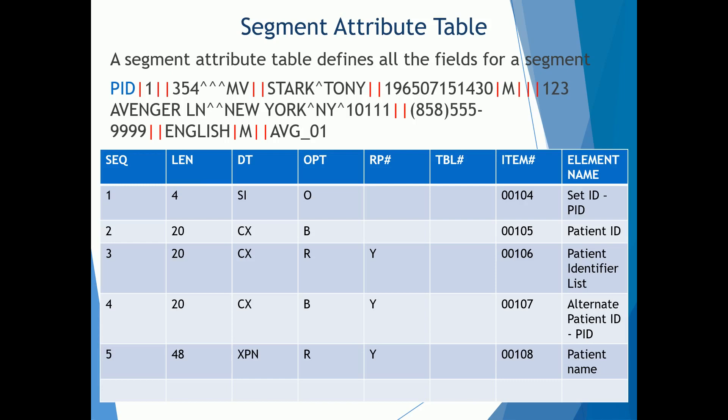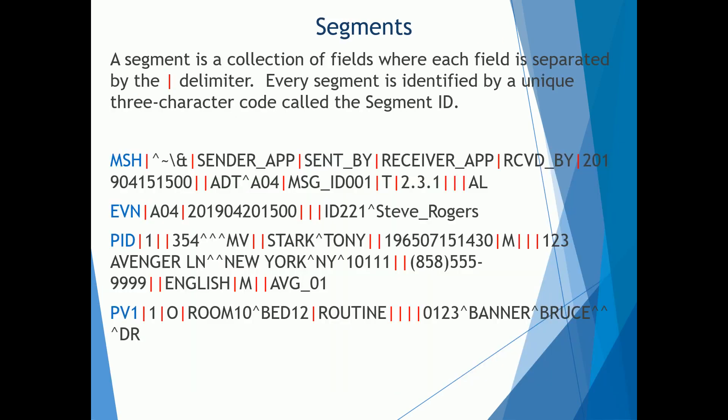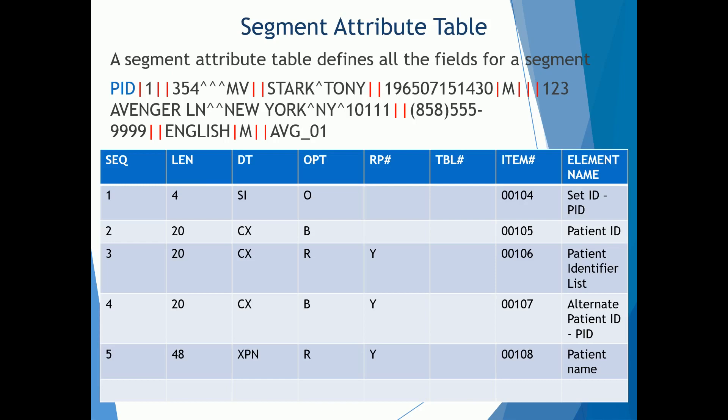So you can kind of see here — this is the message attribute table. In summary, it defines all the fields for a segment. I think we should stop here. We went over segments and the segment attribute table. Stay tuned for the next video coming up — I'll see you next time. My name is Terrell Pauly.